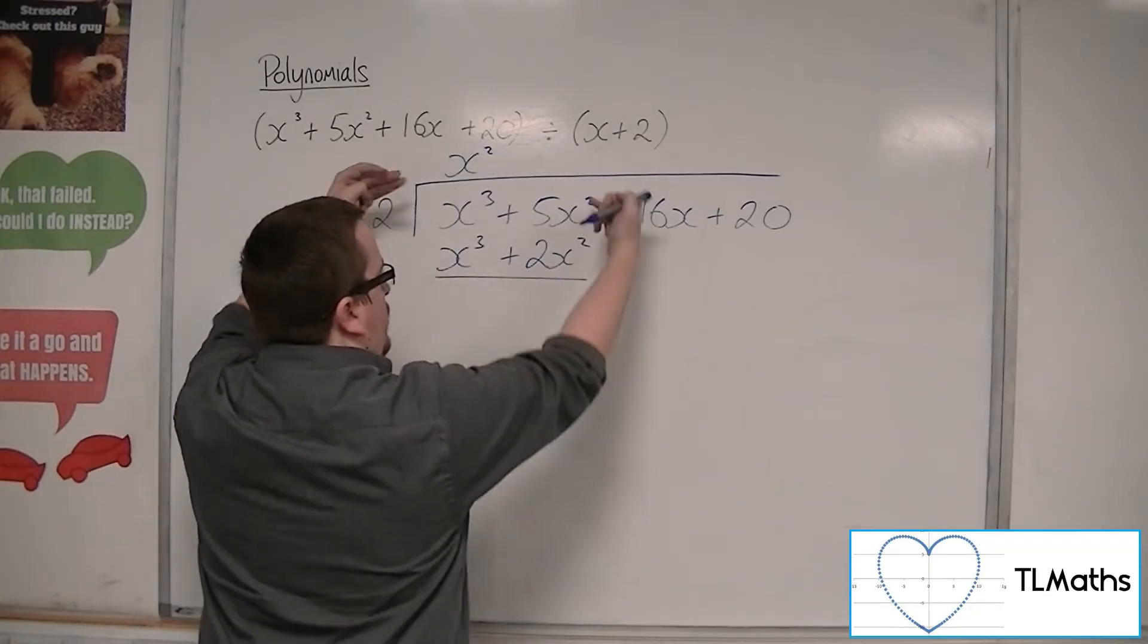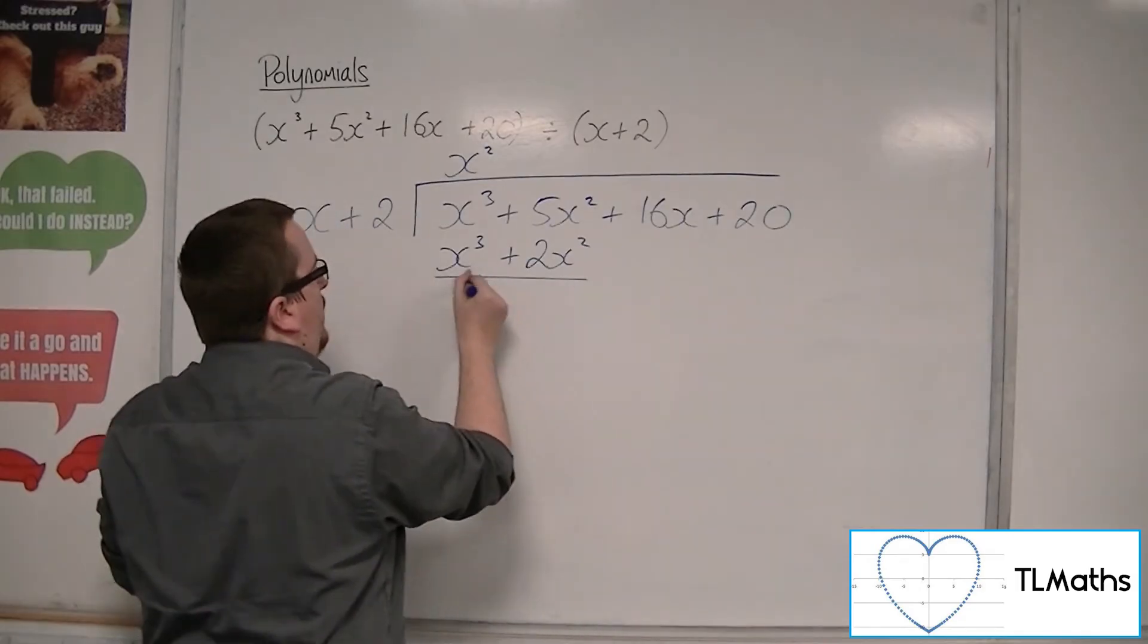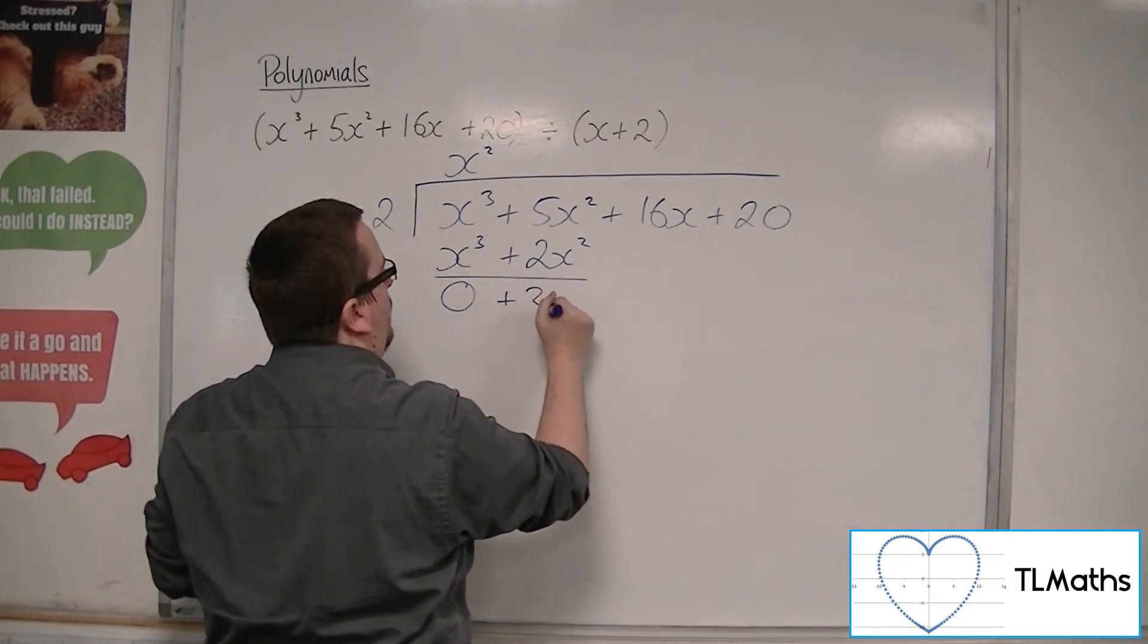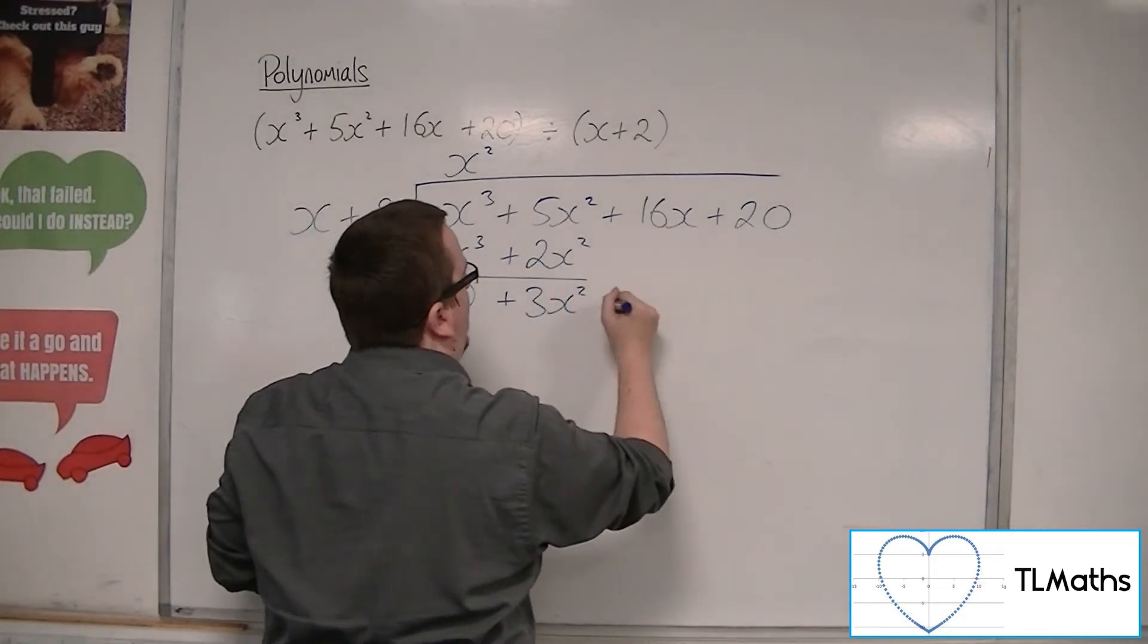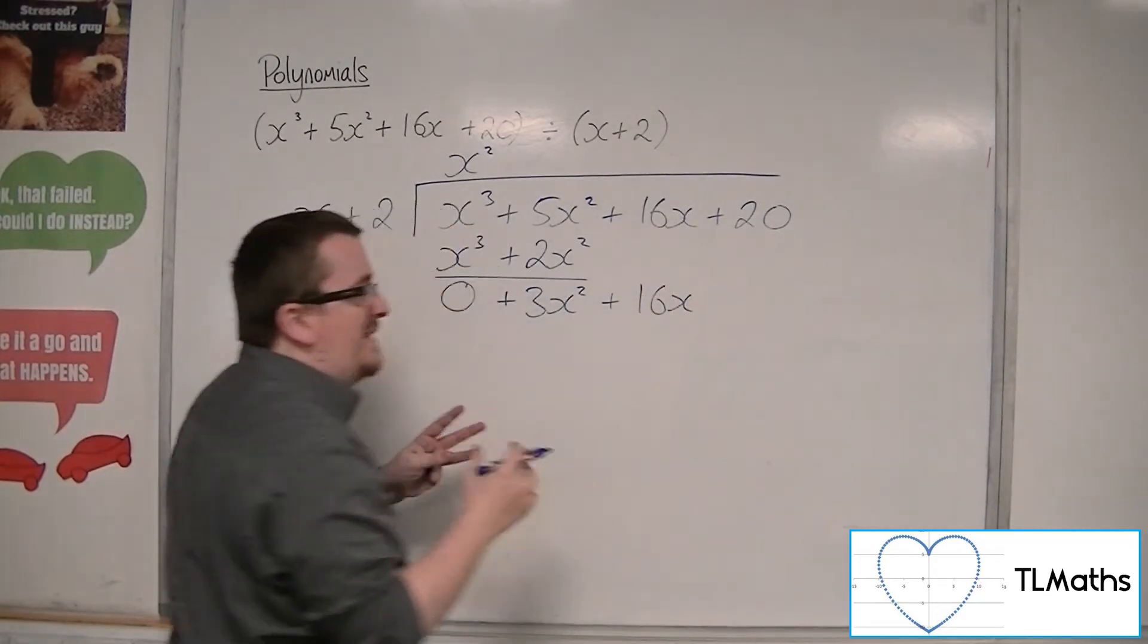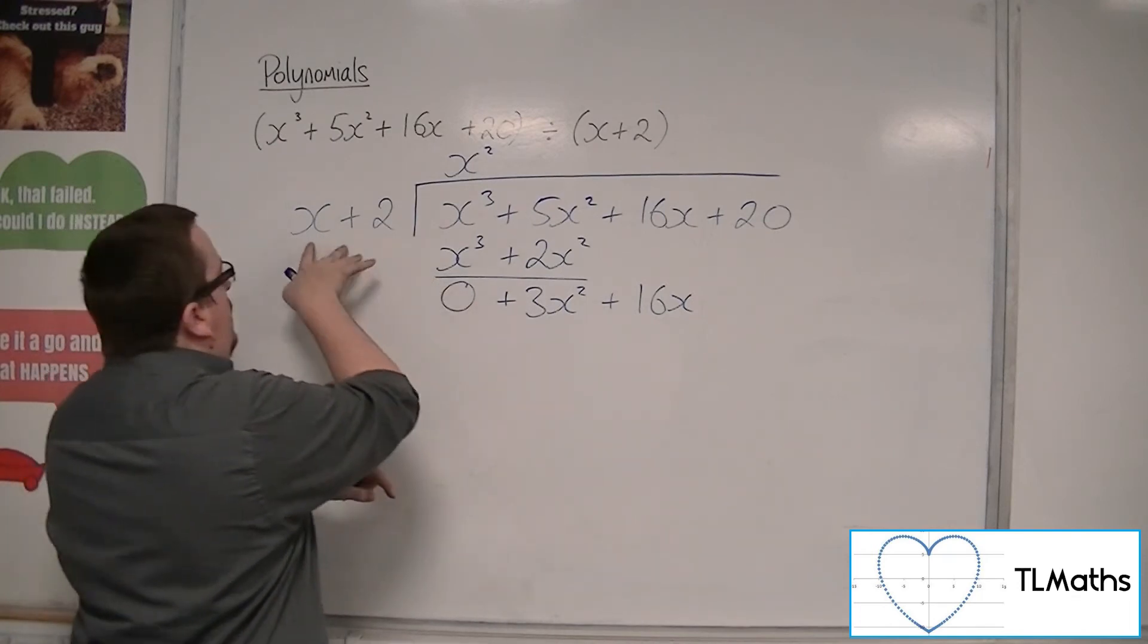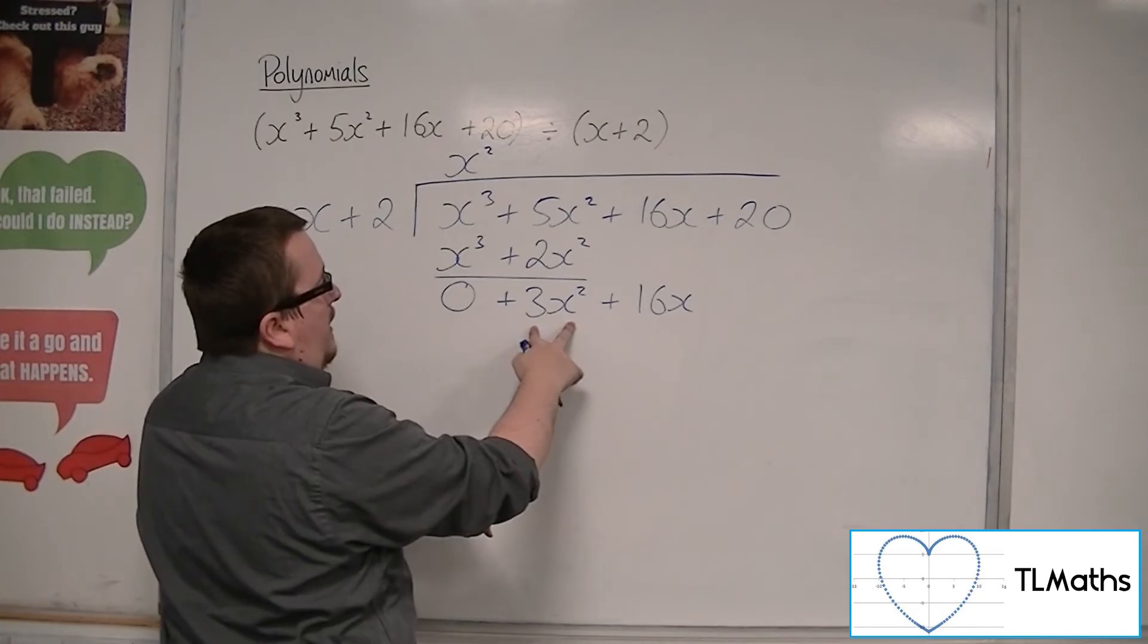You draw a line, perform a subtraction. So you get 0, 5x squared take away 2x squared is 3x squared. Then you bring the next term down. It's working in exactly the same way as we did with the numbers. Then you just do x's into 3x squared.